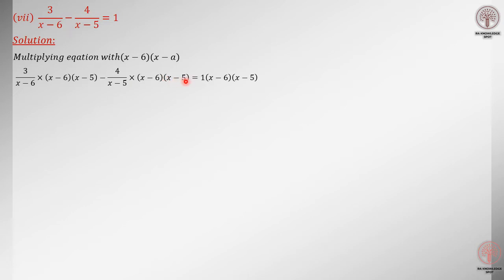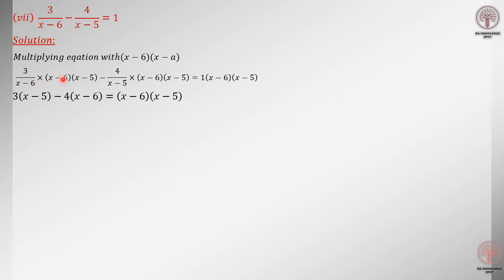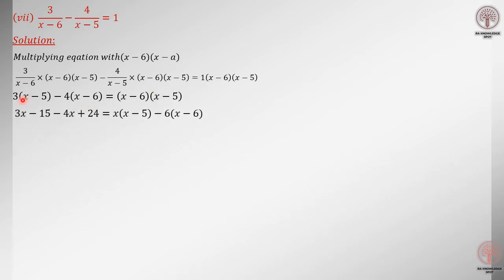The minus stays as it is. Now, 4 divided by (x minus 5) multiplies with (x minus 6)(x minus 5), and 1 also multiplies with (x minus 6)(x minus 5). The benefit of this method is that the fractions completely vanish. x minus 6 cancels with x minus 6, leaving 3 into (x minus 5), minus 4, and x minus 5 cancels with x minus 5, leaving (x minus 6) on the right side.